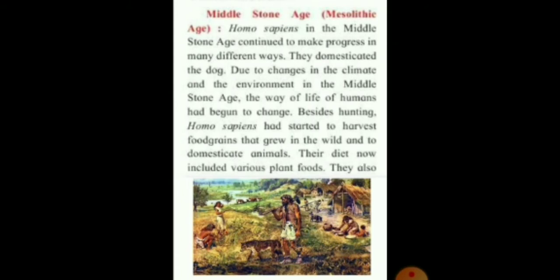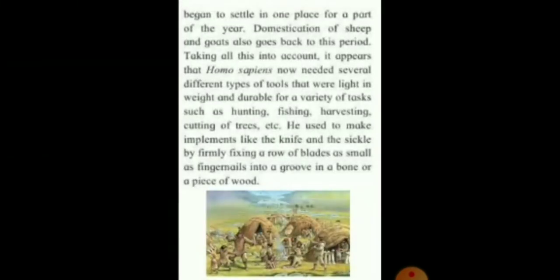They started to harvest food grains — they are not doing only hunting anymore. They also started to harvest food grains that grew in the wild and to domesticate animals. Their diet now included various plant foods. They also began to settle in one place for a part of the year. Domestication of sheep and goats also goes back to this period.